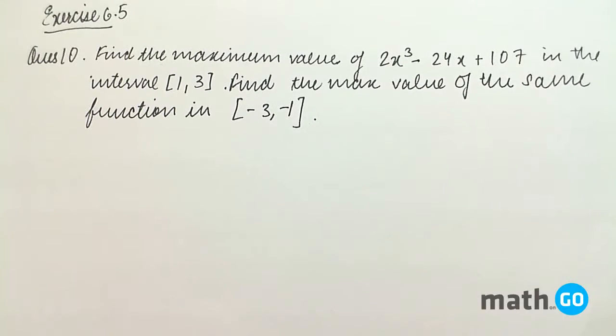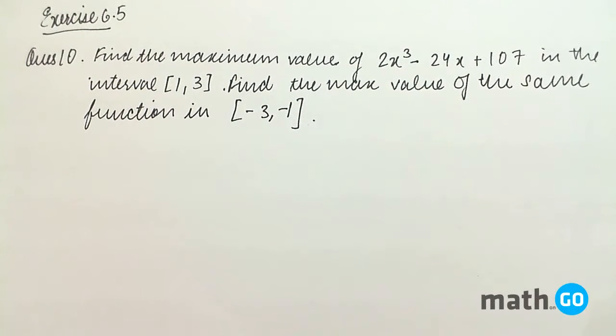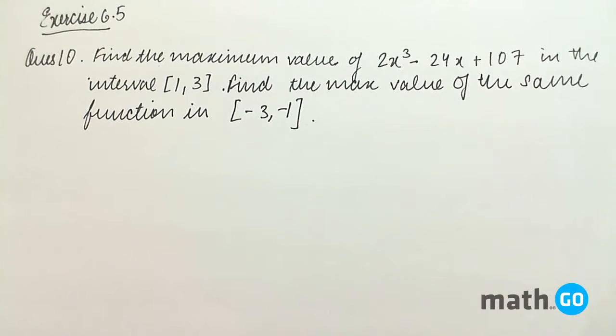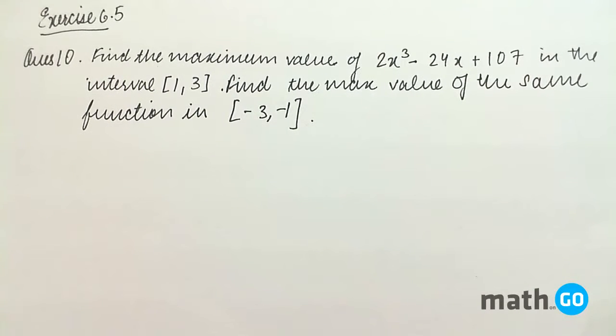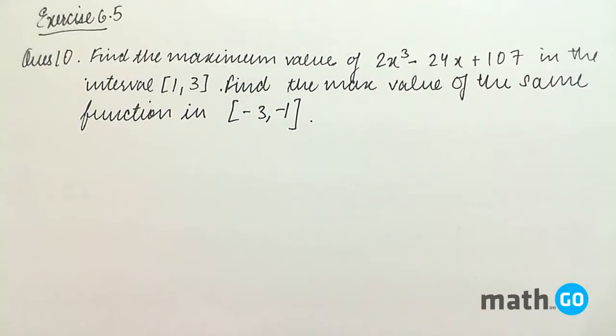Exercise 6.5, question number 10. It says, find the maximum value of the function 2x cube minus 24x plus 107 in the interval 1, 3. So our f(x) is given as 2x cube minus 24x plus 107.